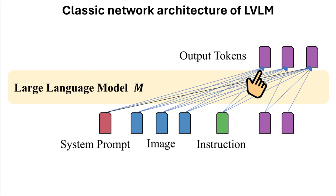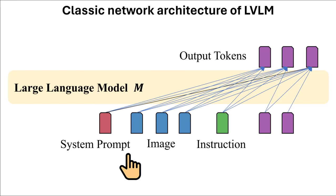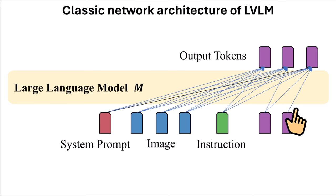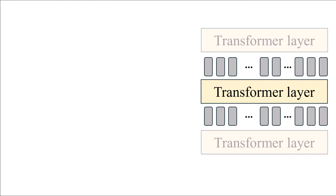Then we use the first output token as additional input, and having all tokens up to the first output token, we construct the second token. We add the second token to the input and in an auto-regressive manner we go on and so forth. Inside LLMs we have a stack of transformer layers, each receiving a set of tokens and outputting a set of tokens.